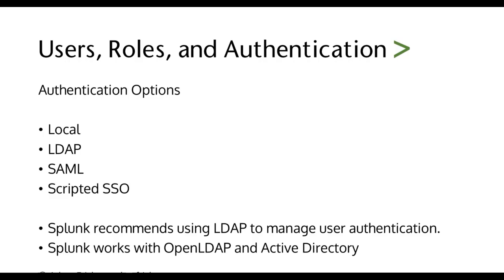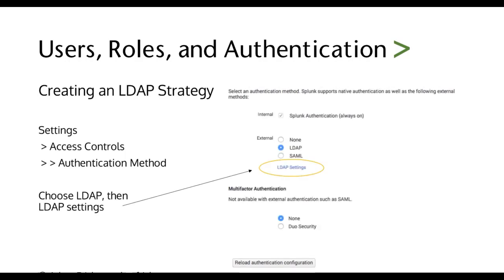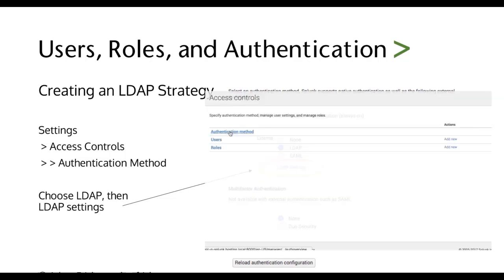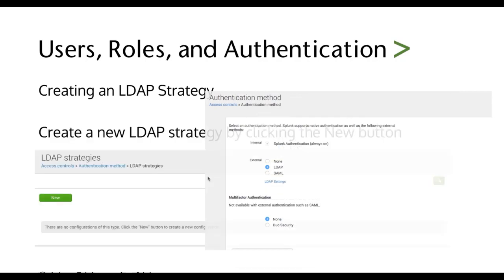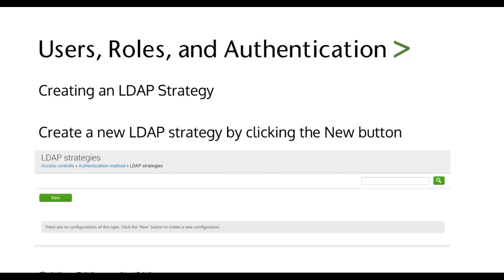The first two are the most important for this class. Splunk recommends using LDAP to manage user authentication — LDAP or Active Directory — because then you can manage roles and users the same way you manage them within your organization, tying into that central directory and management tool you probably already have. To set up an LDAP strategy, go to Settings, Access Controls, then Authentication Method, choose LDAP on the external part, click the blue link that says LDAP Settings, and click New to create one.